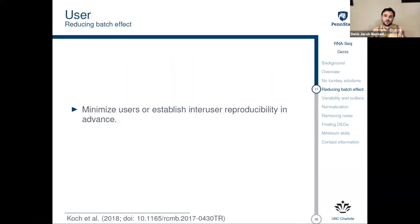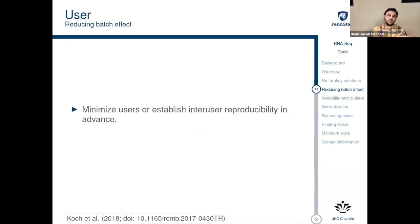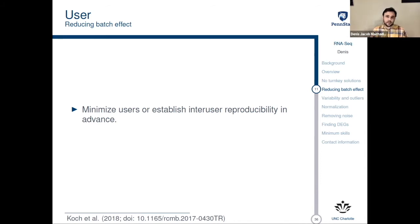Let's go over what you need to do to control for batch effect. From the user perspective, you want to minimize the number of people working on the same project. The same person doing RNA extraction should be the same person preparing the libraries — that would be the ideal scenario. Either that, or you can establish inter-user reproducibility in advance, but you have to control for that. Training people is key, and you should not expect to go to the lab and do this the first time and have everything be okay.